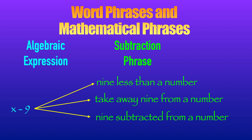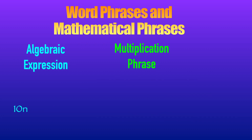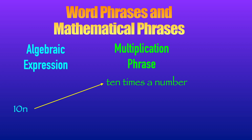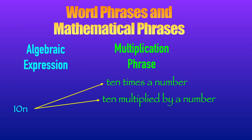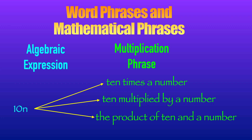Now let's go to the multiplication phrase. For example, 10N. That can be translated to '10 times a number.' The second one: '10 multiplied by a number.' And the third one: 'the product of 10 and a number.' So for multiplication phrases: '10 times a number,' '10 multiplied by a number,' 'the product of 10 and a number.'